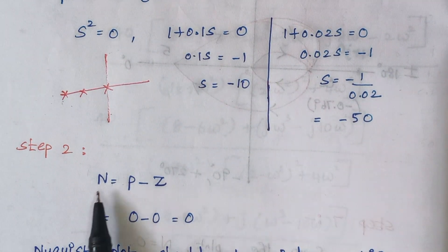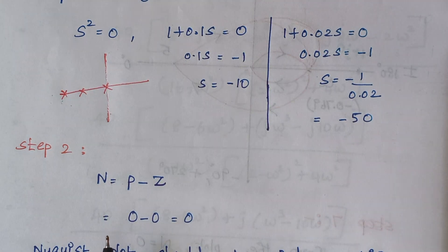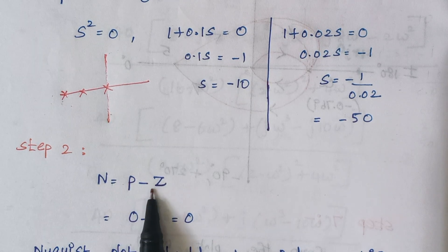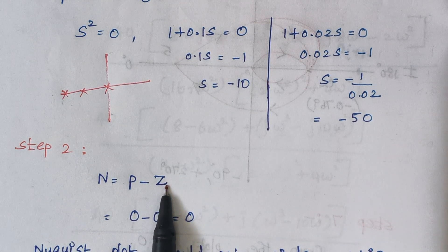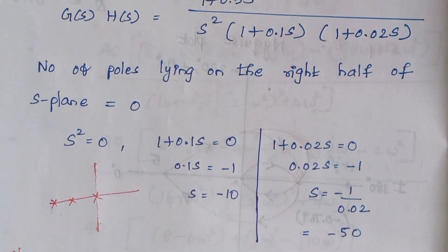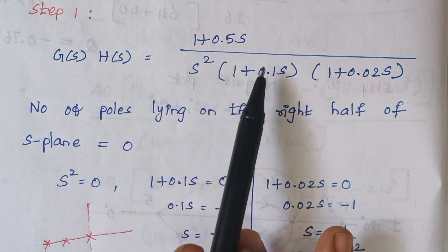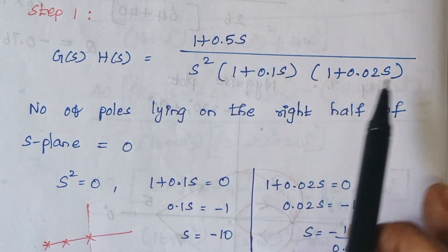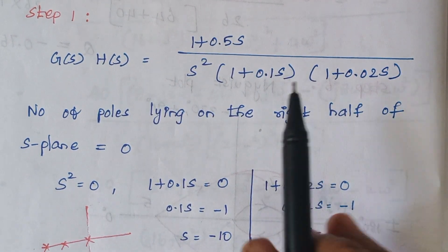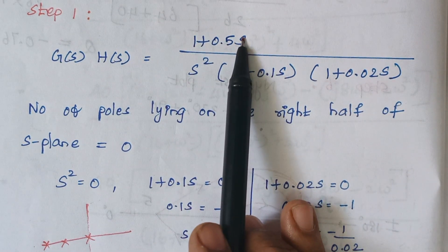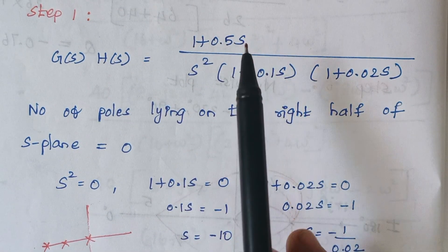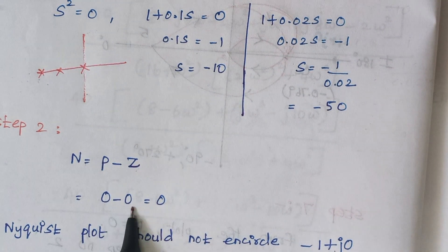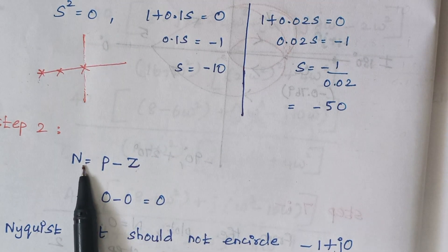Step 2 is finding the number of encirclements. The formula is N = P − Z, where P is the number of poles lying on the right half of the S-plane and Z is the number of zeros on the right half. All poles lie on the left half, and the numerator zero also lies on the left half, so Z = 0. Therefore the number of encirclements N = 0.